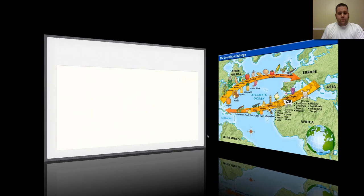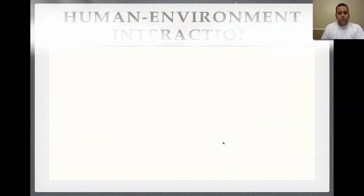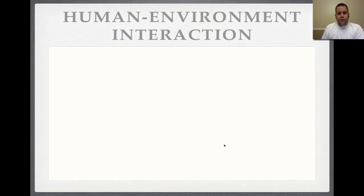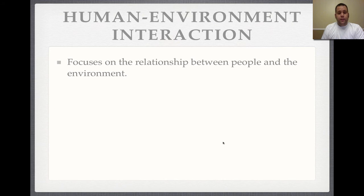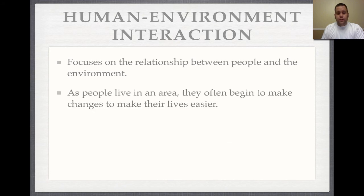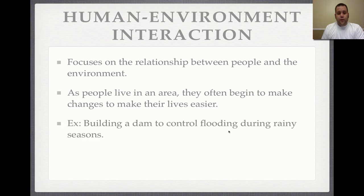Our last theme is human-environment interaction, or HEI. This focuses on the relationship between the people and the environment. As people live in an area long enough, they're going to begin to manipulate the area to make their lives easier. An example of this would be to build a dam to control flooding during rainy seasons. Think of right now — Hurricane Isaac is hitting Louisiana.